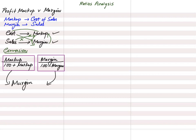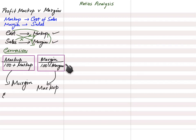These two formulas are very important to remember by heart: markup ÷ (100 + markup), and margin ÷ (100 − margin). You can remember this as: markup — 'up up' means to add, so plus comes in the markup formula because we are adding it up.